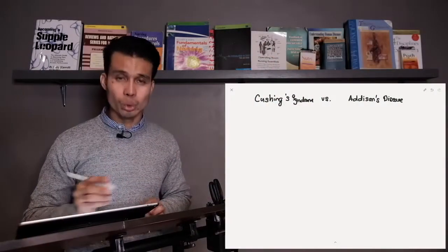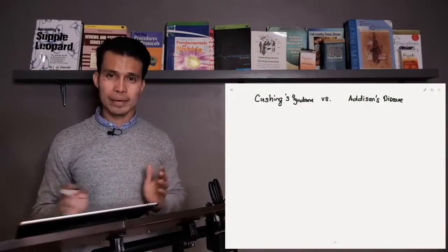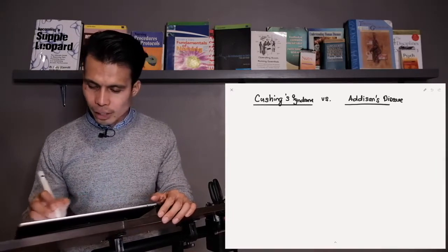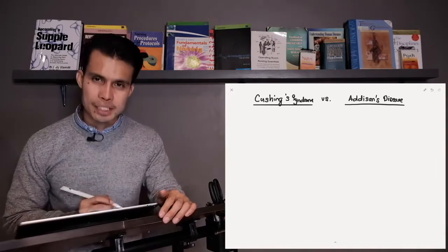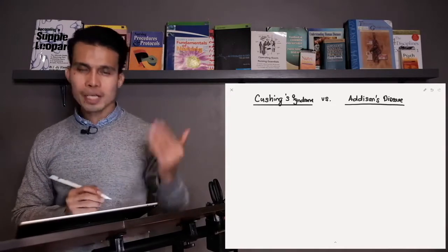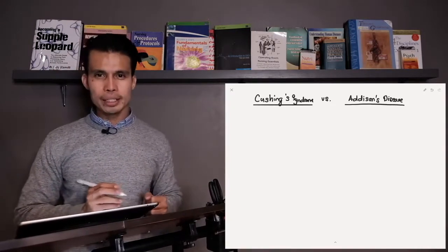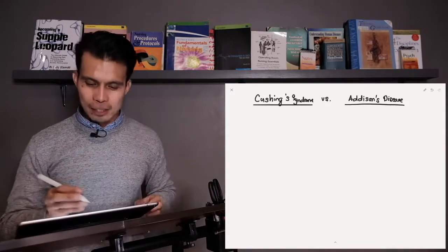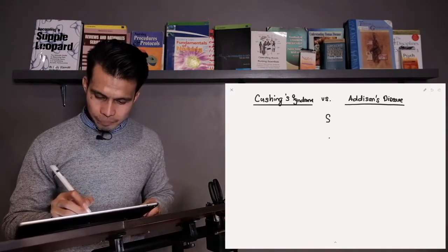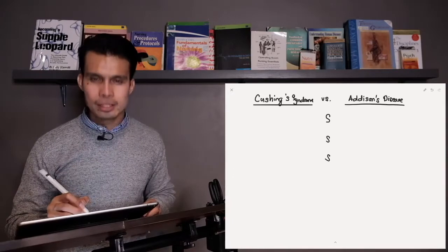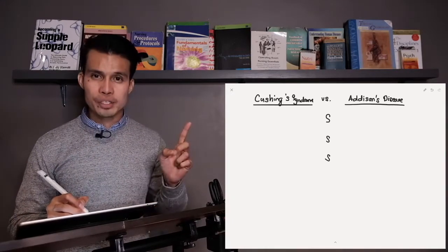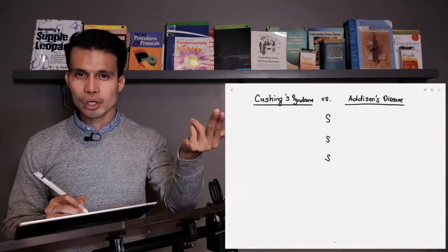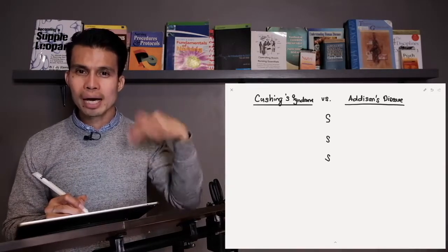We have two disorders affecting the adrenal cortex: Cushing's and Addison's disease. The basic pathophysiologic framework is to remember the 3S. In Cushing's, you have increased glucocorticoids, mineralocorticoids, and androgens — the GMA is increased.